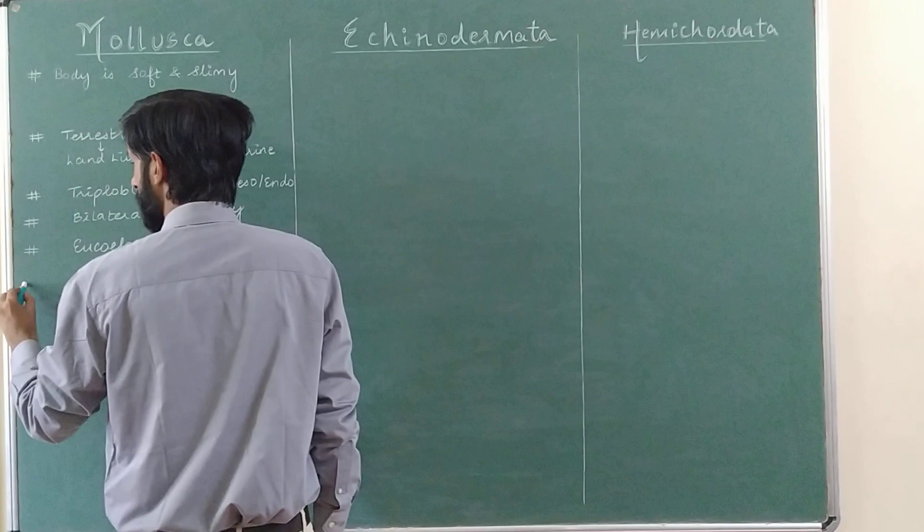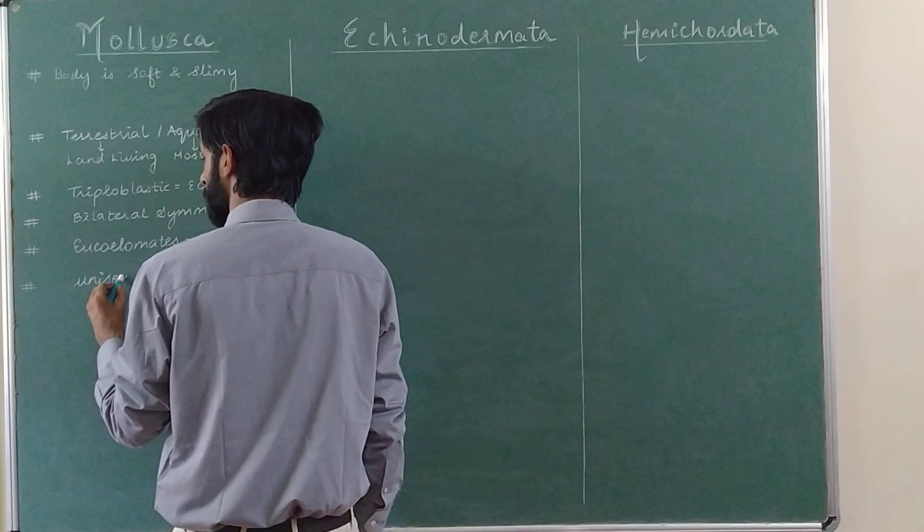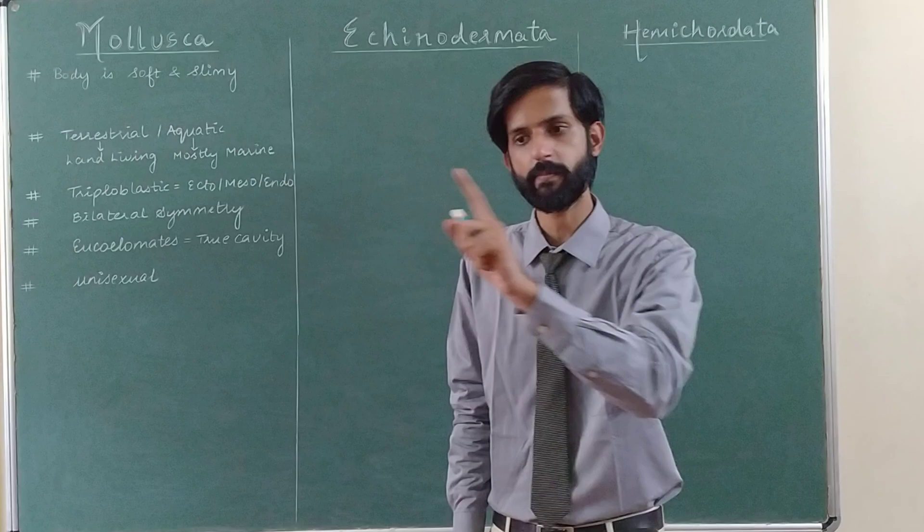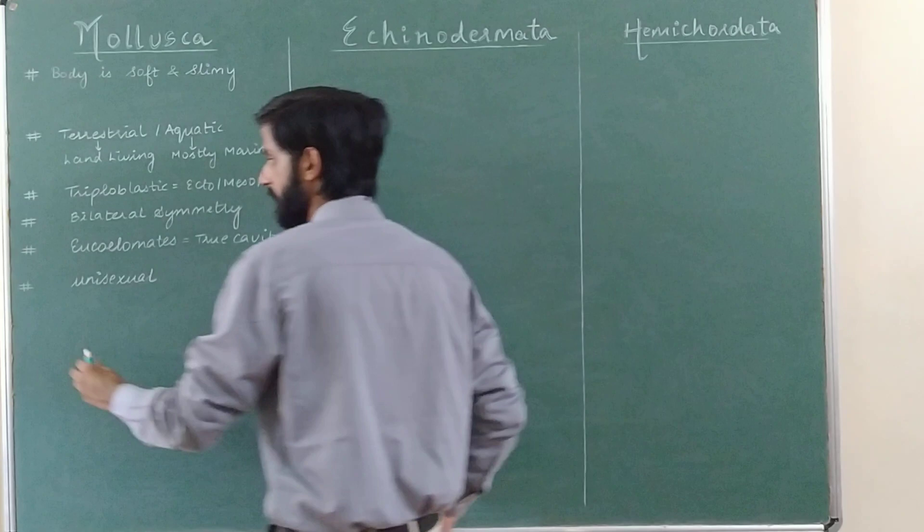Regarding reproduction, these organisms are unisexual. Unisexual means in one body there is only one gender — that is, male bodies and female bodies are separate. So these animals are unisexual.